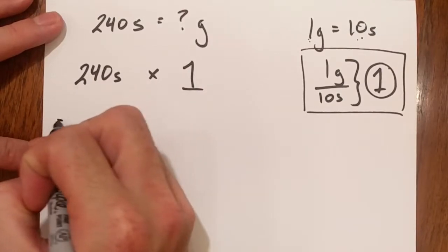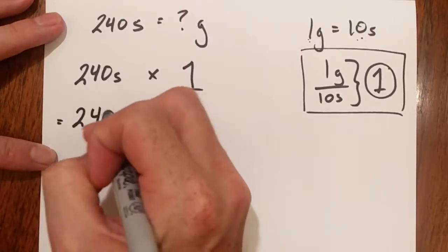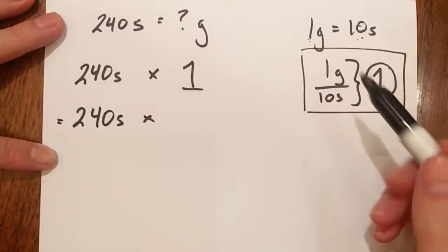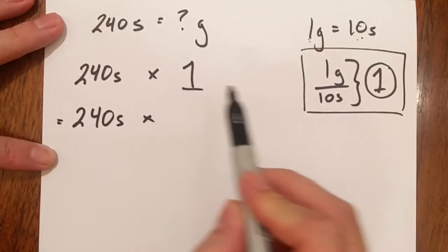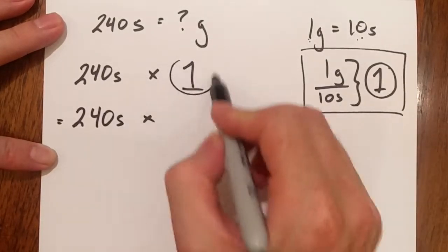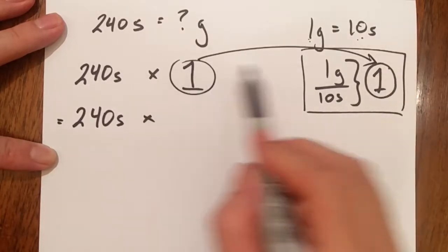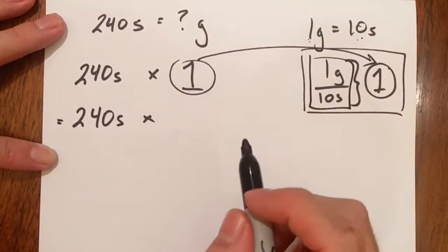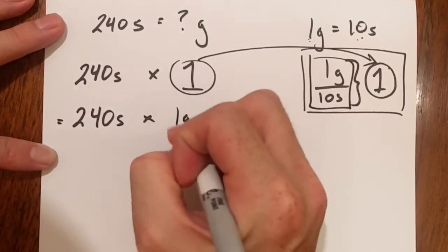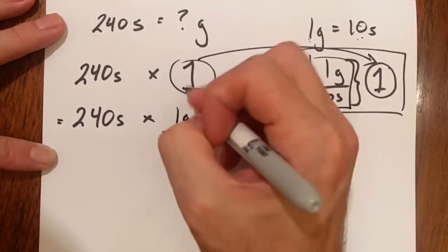What I can do though is I can say 240 silver and I'm going to times it by one but instead of one I'm going to make a substitution. Remember this? This one here? Well I'm going to substitute this one in for all of that. Okay so I have one gold over ten silver.